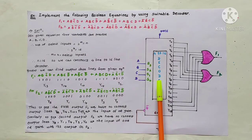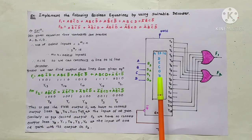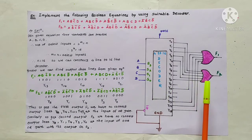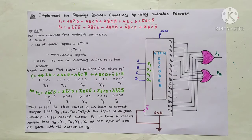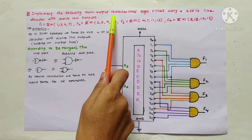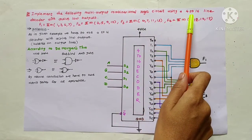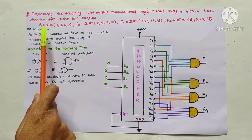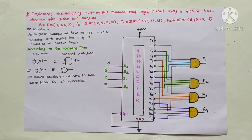From this example it is clear that we can construct more than one logical equation using a decoder, compared to a multiplexer which can implement only one logical equation. Now let us see another example: implement the following multi-output combinational logic circuit using a 4-to-16 line decoder with active low outputs.